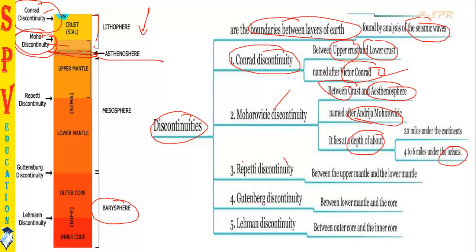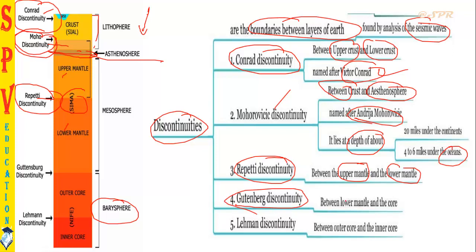Next is the Repetti discontinuity — between the upper mantle and lower mantle. Then the Gutenberg discontinuity — between the lower mantle and outer core. Here the lower mantle meets the core, and between them lies the Gutenberg discontinuity.